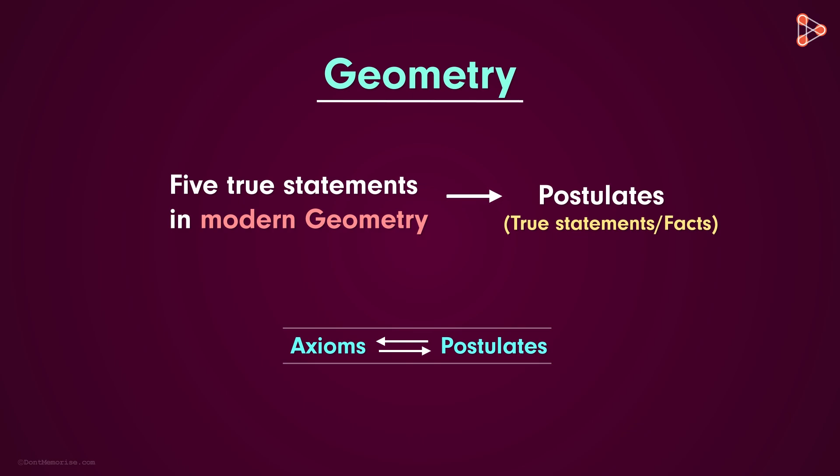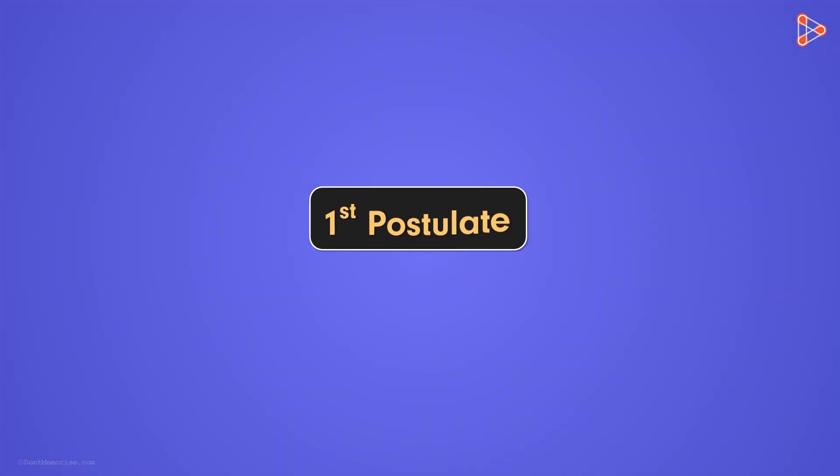So in this lesson, let's take a look at the five important postulates that Euclid devised which helped improve more theorems. Let's have a look at what the first postulate says.